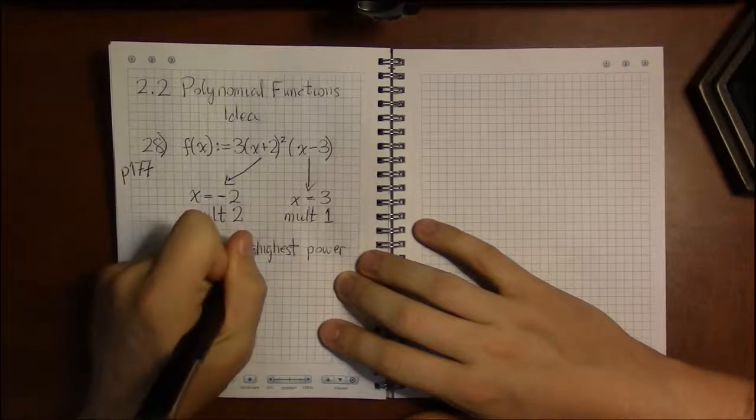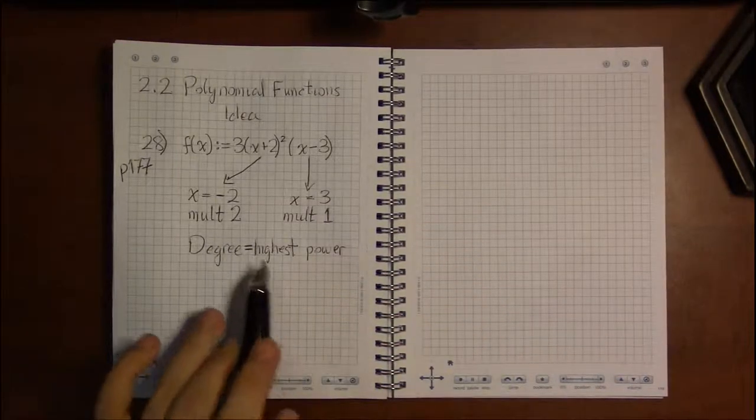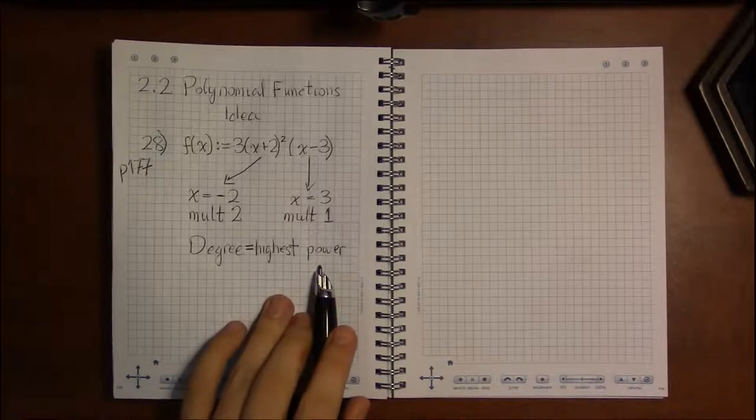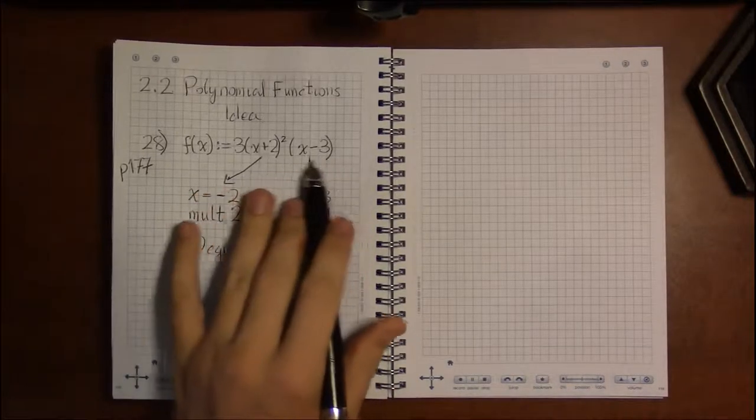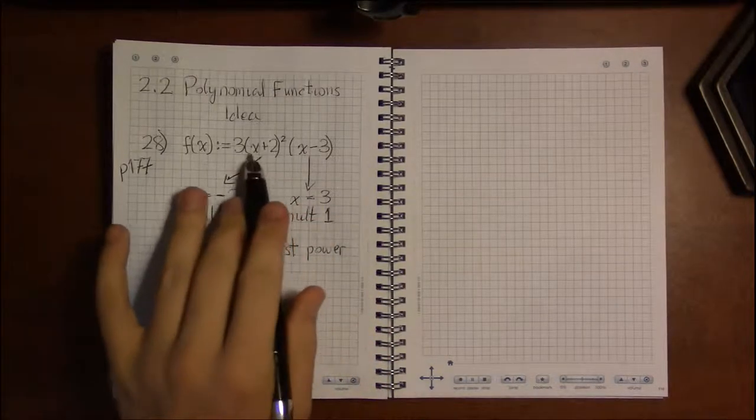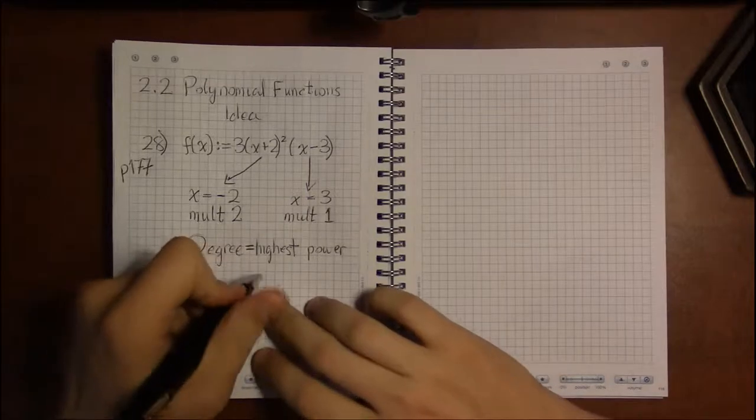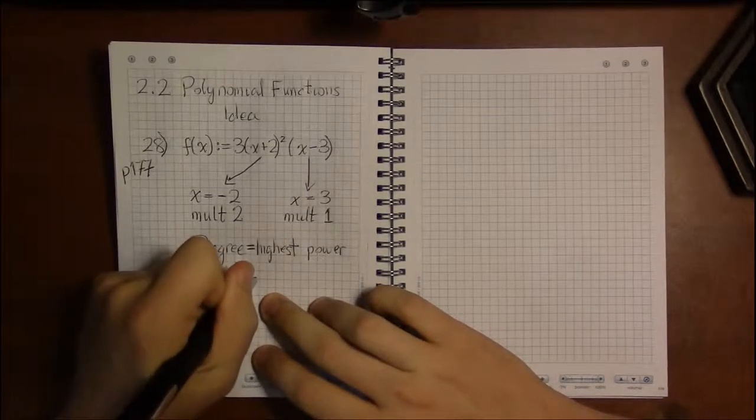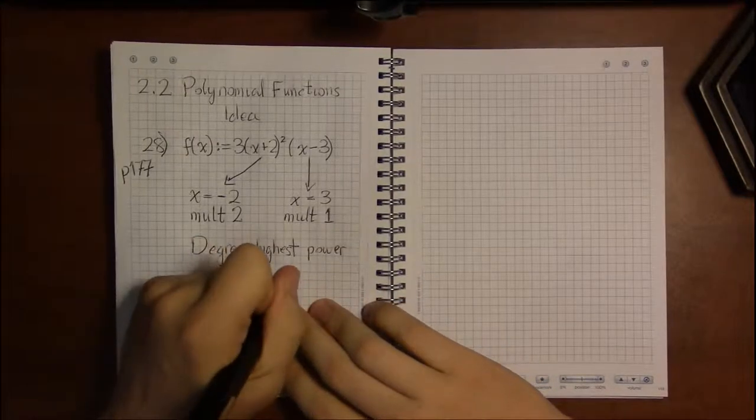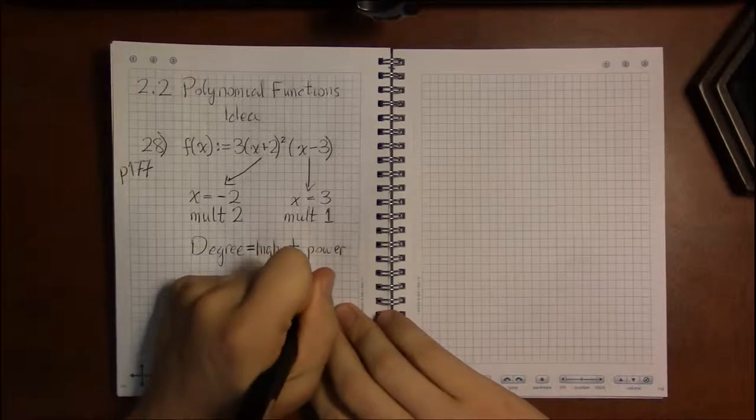But it turns out there's another way around this. The degree can be the highest power of x, which we can't see right now because we'd have to multiply everything out in order to see what the highest power of x is. It turns out it's also equal to the sum of all the multiplicities of its roots.